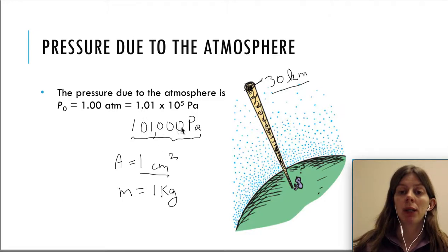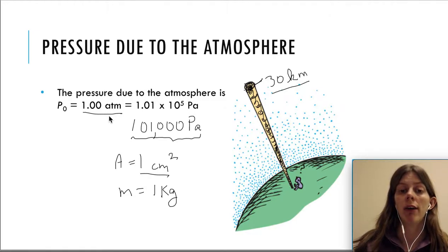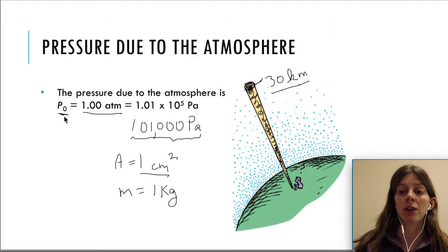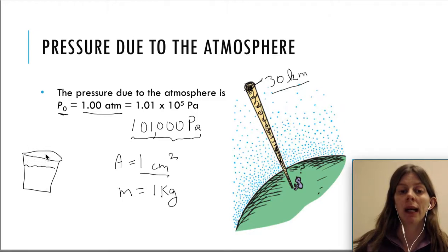This pressure due to the atmosphere is also called one atmosphere, and it gives us the conversion factor between pascals and atmospheres. We represent the pressure due to the atmosphere by p-sub-zero, or p-naught. Whenever we have a liquid in a problem that is open — say an open glass — the pressure exerted right at the surface of that liquid is going to be p₀, the pressure due to the atmosphere: all the weight of the air pressing down on that glass.